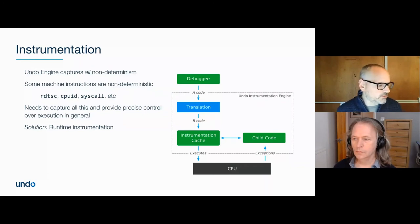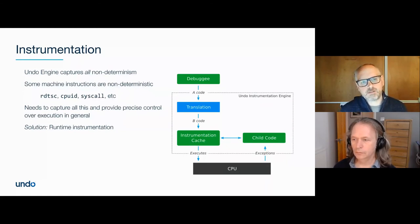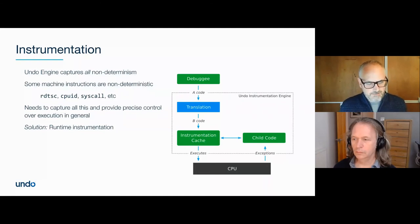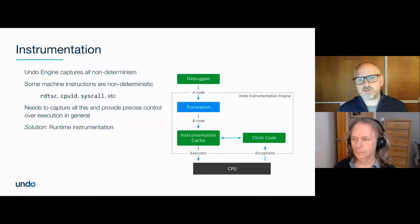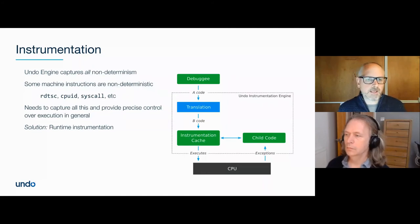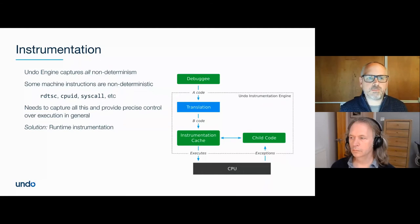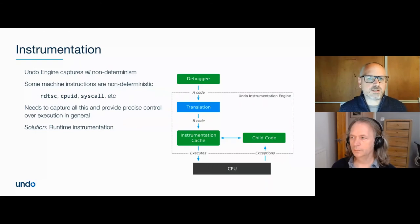You can also deploy in production. Going back to that Cadence example where the application was crashing after eight hours one in 300 runs — they set up a whole bunch of machines over the weekend, came in Monday morning, a few had crashed, took one recording, and got straight to the source of the bug within a couple of hours. Compute time is cheap and human time is expensive — spending some compute time in your test farm or production to capture the failure so a human can diagnose it quickly is usually a good trade-off.